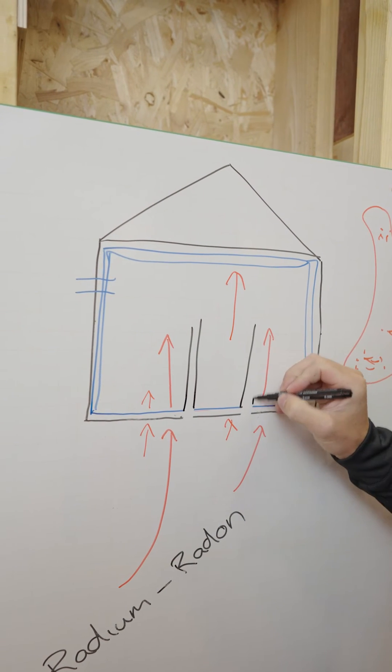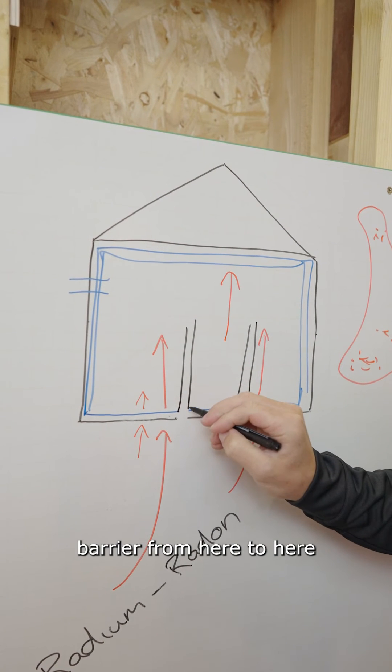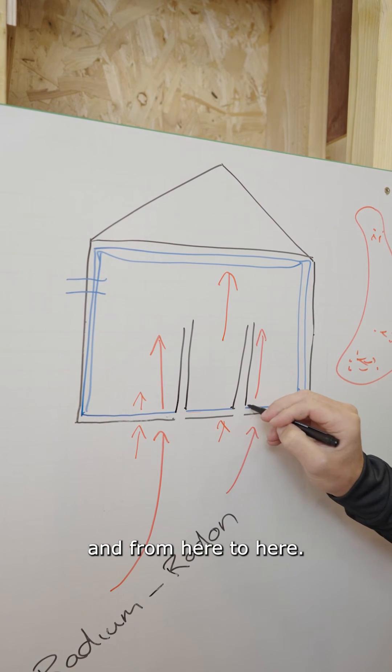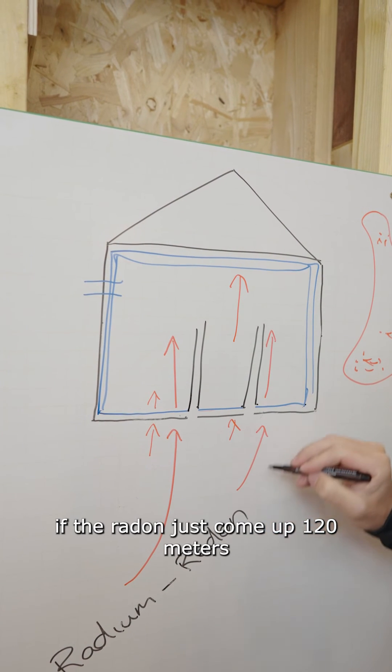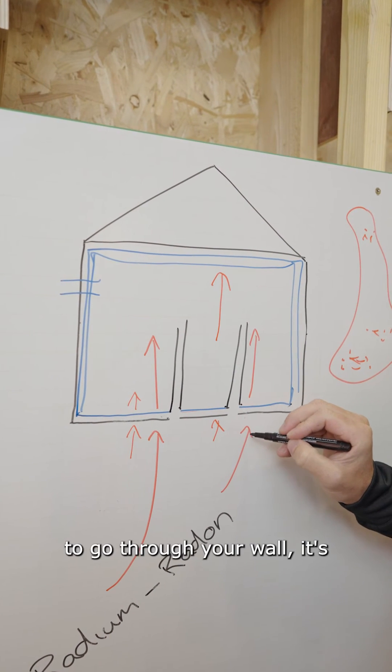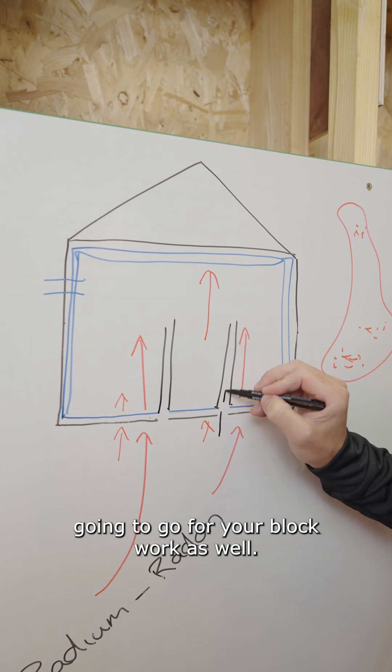So they put a radon barrier from here to here and from here to here. Well if the radon's just come up 120 meters to go through your wall it's going to go through your block work as well and it'll come out there as well.